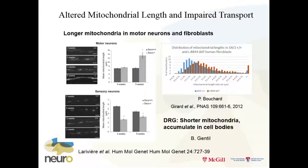In motor neurons and Purkinje cells — and fibroblasts as well — they have longer mitochondria. Here are the motor neurons: at three weeks, there's no difference, but at five weeks these mitochondria are longer. This is around the time we start seeing the bundles. It's basically shifting the length profile of mitochondria to longer. Interestingly, in DRG neurons in culture, we got the opposite result and we have no idea what that means.